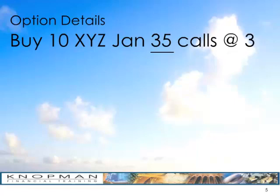The combination of the expiration and strike price is called the series. Every unique combination of expiration and strike price is a different series. For example, the Jan 45s would be a different series, and the Feb 35s would also be a different series.